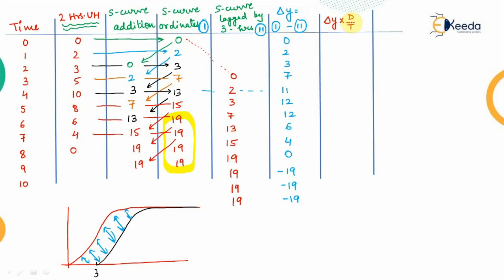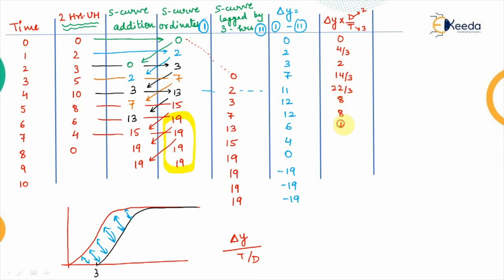Whatever ordinate we get (delta Y) represents the direct runoff hydrograph. To get the unit hydrograph we multiply by d/t = 2/3. The three-hour unit hydrograph ordinates become: 0, 4/3, 2, 14/3, 22/3, 8, 8, 4, 8/3, 0. We stop at the zero value since subsequent values go negative.